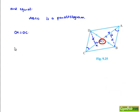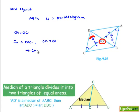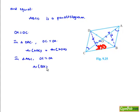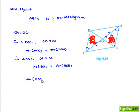Now in triangle DAC, since OC equals OA, area of triangle DOC equals area of triangle DOA. Also in triangle ABC, OA equals OC means area of triangle BOC equals area of triangle DOB. But we know that area of triangle DOC equals area of triangle BOC. Therefore, area of triangle DOC equals area of triangle DOB. This completes the first proof.